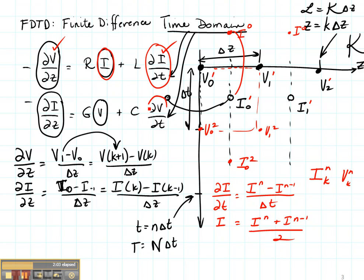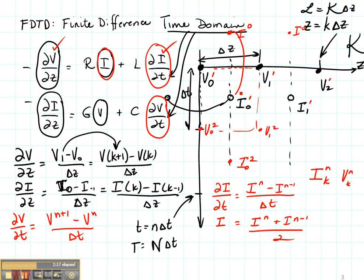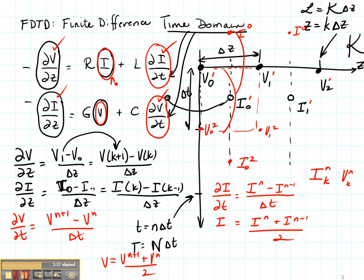Now let's look at the other equation — the bottom equation. Suppose that I did the voltage as a function of time. So DV/DT is going to be V at N plus 1 minus V at N divided by Delta T. That ends up at the same time as my current term fortunately, but it does not end up at the correct time for my voltage. So I'm going to have to set my voltage to be equal to V at N plus 1 plus V at N divided by 2. In both of these equations, I have to average my current and my voltage terms in terms of time.